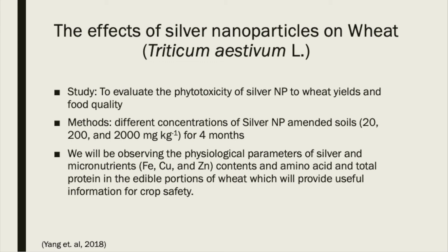Now we will be looking into an actual study between nanoparticles and their effect on food crops such as wheat. Wheat is a monocotyledon grass plant that is widely cultivated throughout the world. More than 40% of the protein that the human body consumes is supplied by wheat grain. As previously mentioned, silver is one of the most commonly used metal-based nanoparticles in industries and agricultural practices. Therefore, it is important that we look into the phytotoxicity of silver nanoparticles on wheat. The study focuses on the alteration of crop yield and quality of wheat upon exposure to silver nanoparticles. The method involves different concentrations of silver nanoparticles in amended soils of 20, 200, and 2,000 mg for four months. We will be observing the physiological parameters of silver and micronutrients such as iron, copper, and zinc in edible portions of wheat, which will provide useful information for crop safety.